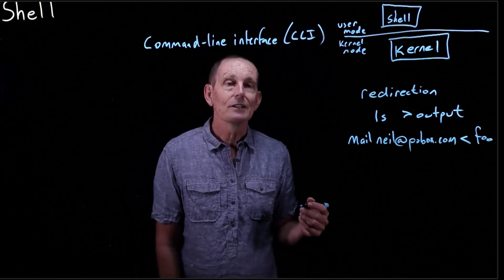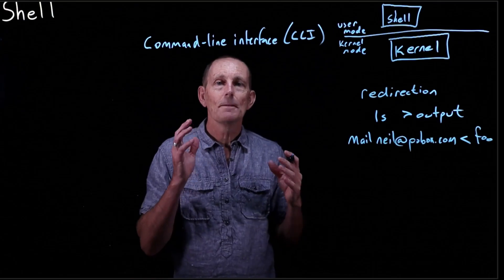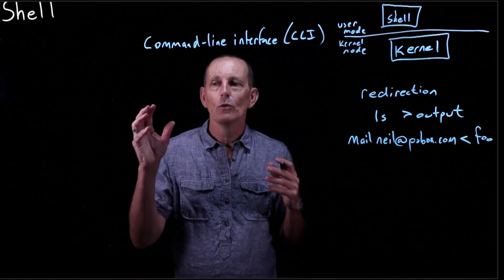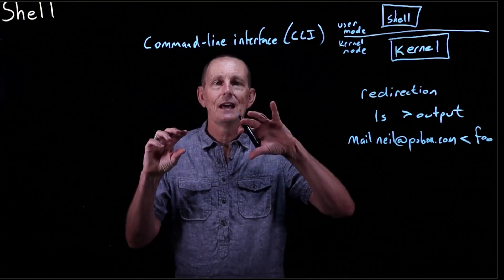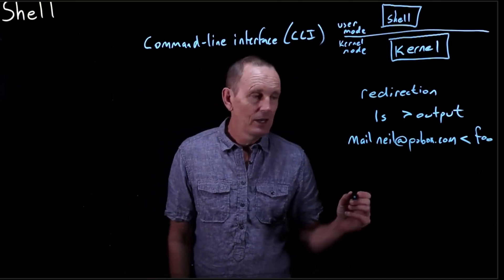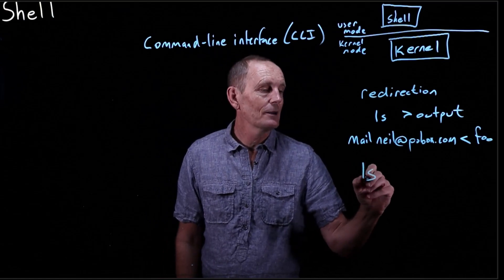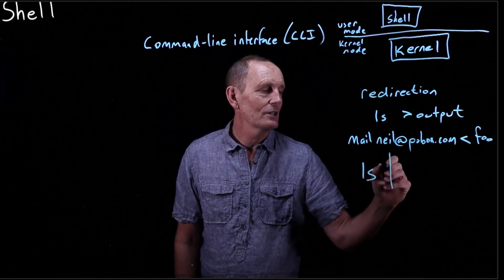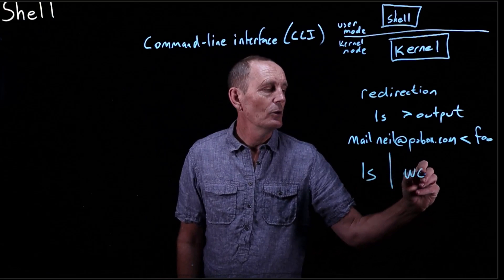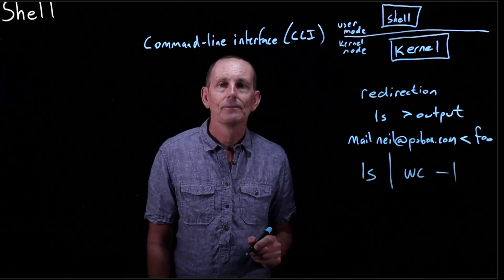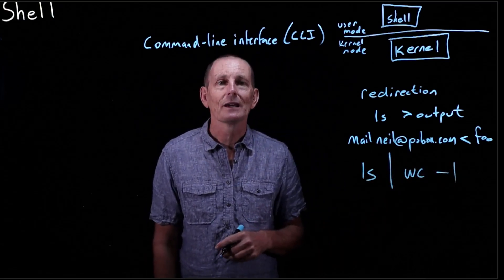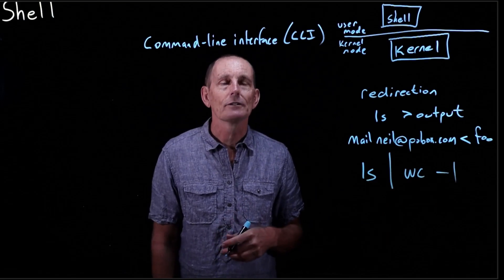What else can I do? I can do piping. So I can feed it in as the input of another program. For example, let's say I want to find out how many files are in the current directory. I can do ls, pipe that, so that's the vertical bar, to word count minus l. And they'll give me a number, you know, a number like 32, 52, 5, whatever.